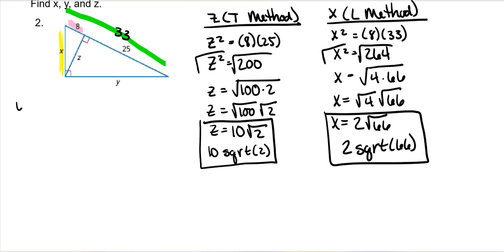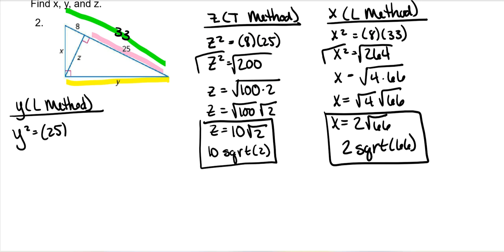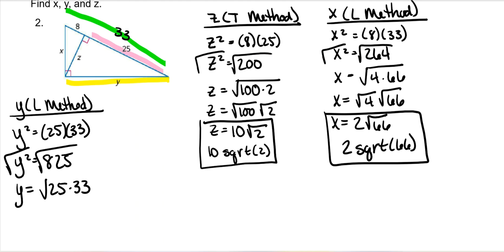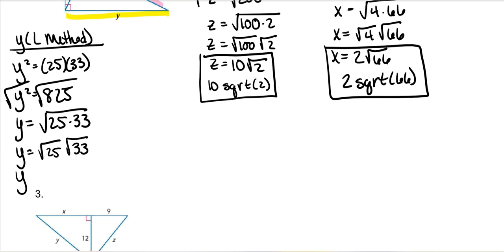And lastly, for Y, we use the L method as well. Y is the leg, and the part closest to it is 25, times the whole hypotenuse 33. So Y squared equals 25 times 33, which is 825. The square root of 825 is the same as the square root of 25 times 33, giving us 5 square roots of 33. In Schoology: 5 SQRT(33).